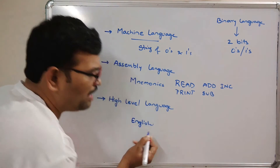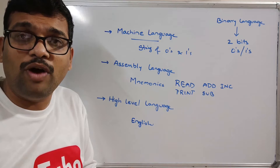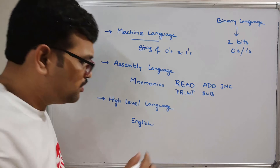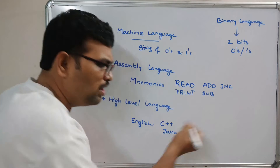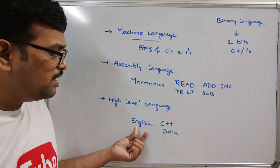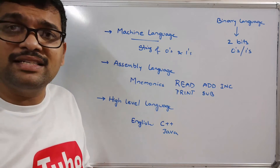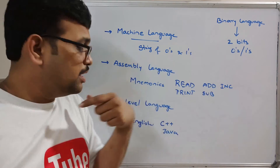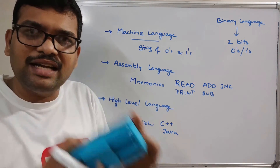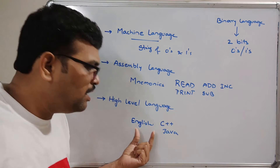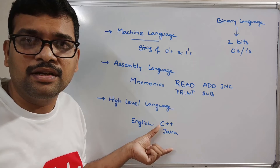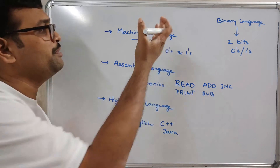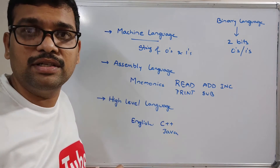Coming to high level language — instructions are written completely in English using some high level language. Whatever instructions we are giving, those can be written in some language. For example, we can go with C++, Java, and all these programming languages, which are represented in English because the user can't represent instructions in the form of zeros and ones. So the user will create a program and set instructions using a convenient programming language.